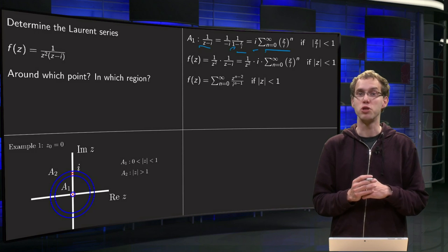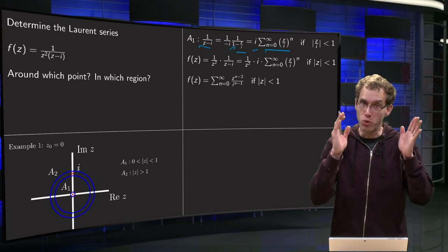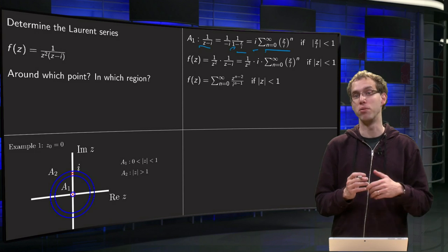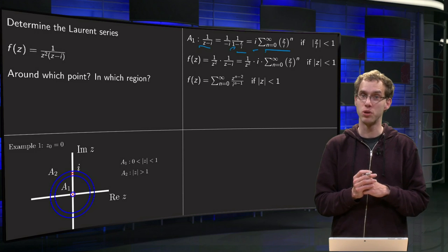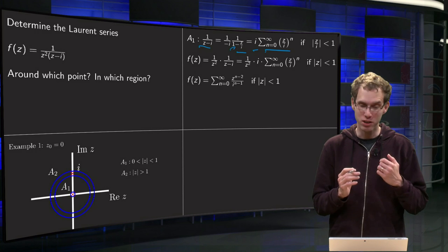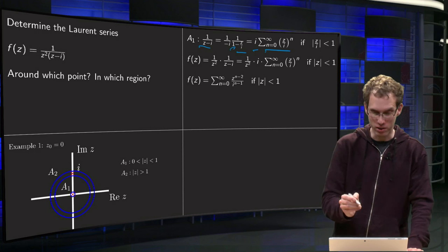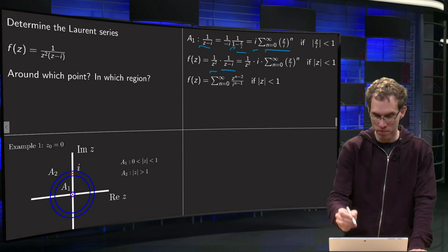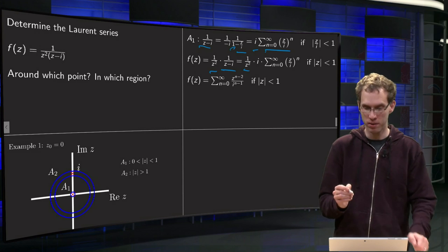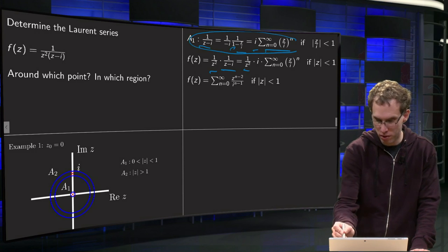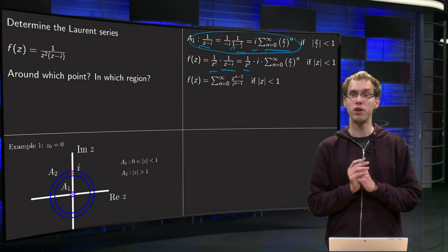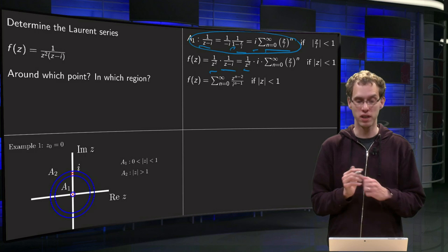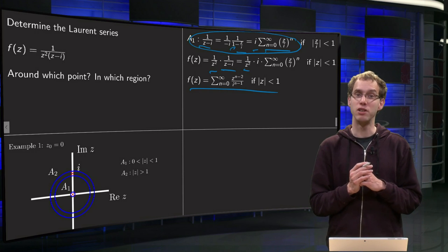This converges if the ratio is smaller than 1, meaning |z/i| < 1. Since |i| = 1, this converges if |z| < 1, which is exactly the case in annulus A1. So we write f(z) = 1/z² × 1/(z − i). We leave the 1/z² as is and substitute the expansion for 1/(z − i). Taking the 1/z² into the sum, we get an expression with only powers of z — and there we have our Laurent expansion in annulus A1.